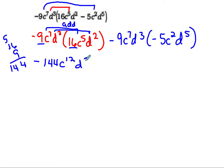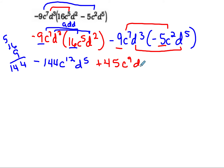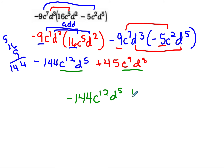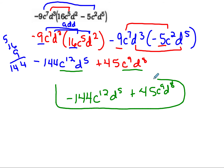We multiply 9 times 16: 9 times 6 is 54, 9 times 1 plus 5 is 14, giving us negative 144. Then c to the 7th times c to the 5th — 7 plus 5 — gives c to the 12th. And d to the 3rd times d to the 2nd gives d to the 5th. Then negative 9 times negative 5 is positive 45, c to the 9th, d to the 8th. Since c to the 12th d to the 5th and c to the 9th d to the 8th are not like terms, the final answer is negative 144c to the 12th d to the 5th plus 45c to the 9th d to the 8th. We always write variables in alphabetical order.